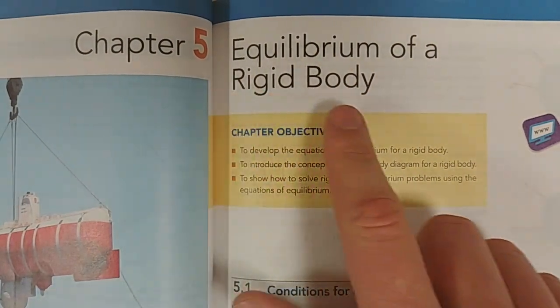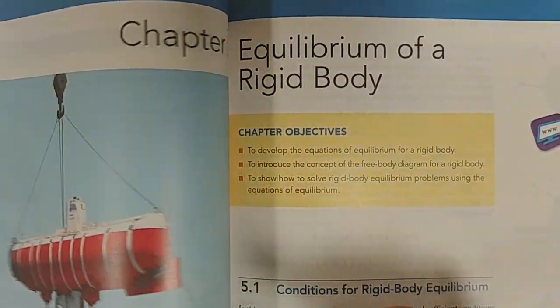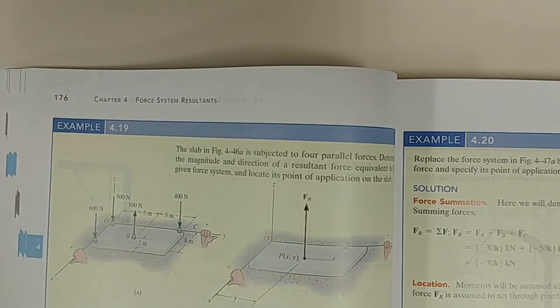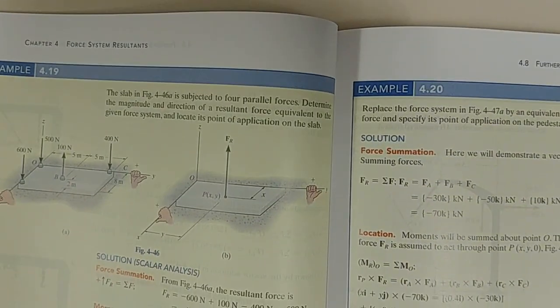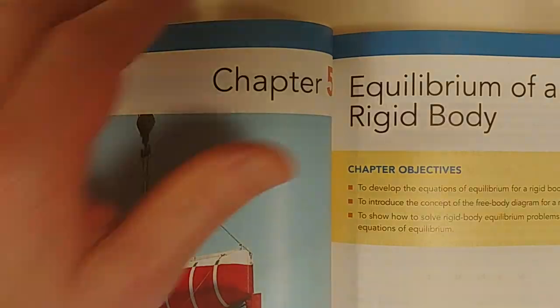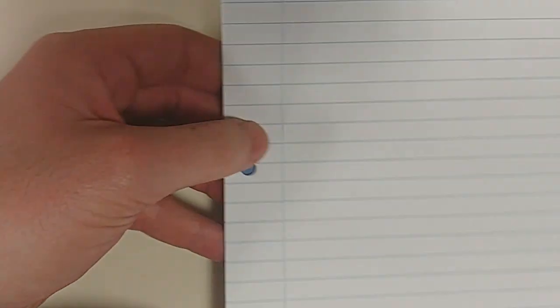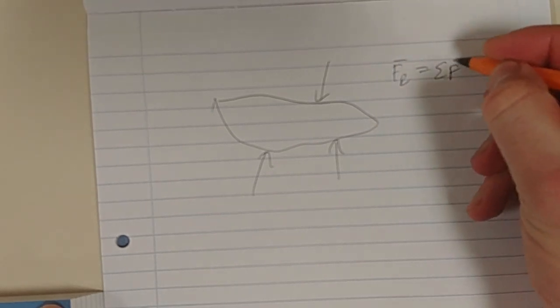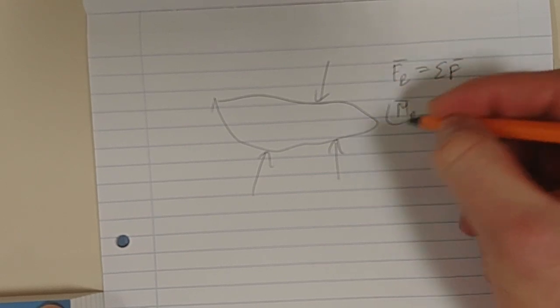Okay, so Chapter 5 says equilibrium of a rigid body. What was Chapter 4 about? Chapter 4 says force system resultant. So all we did in Chapter 4 was we looked at resultant forces. We learned how to calculate resultant forces and resultant moments.